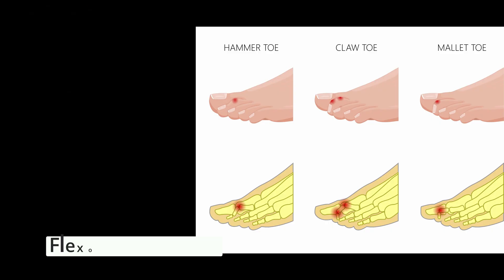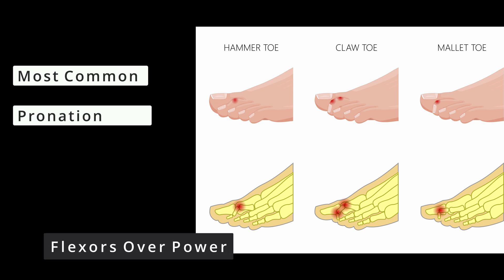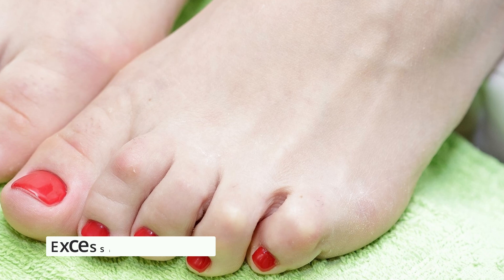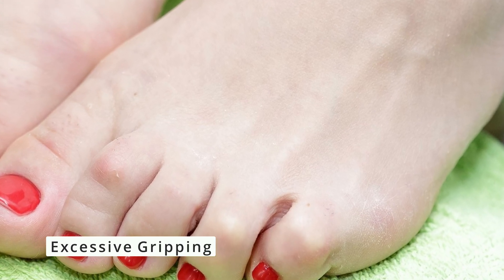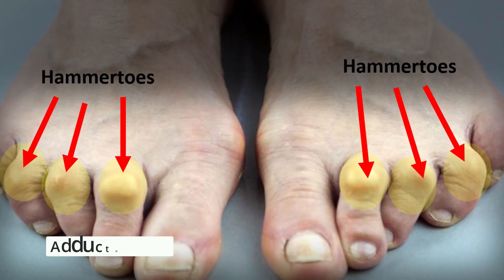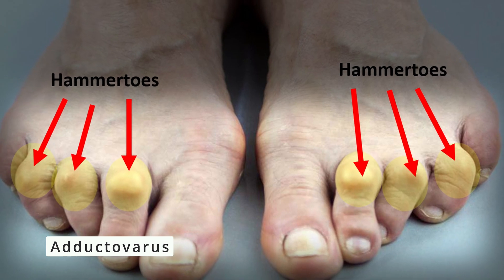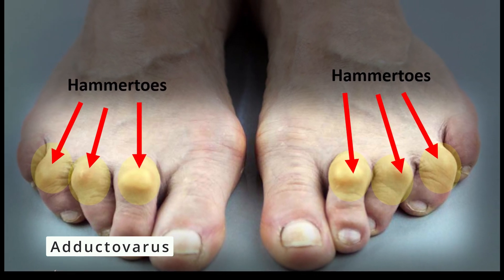Flexor stabilization is the most commonly seen type of hammer toe deformity. Key points about flexor stabilization are the excessive gripping of the lesser digits and the adducto varus deformity of the fifth toe.